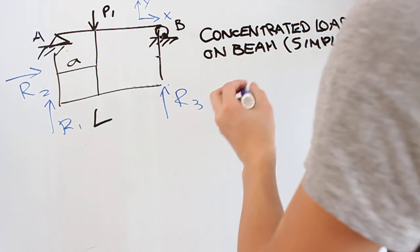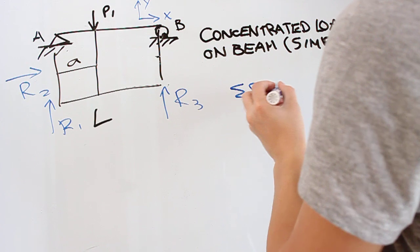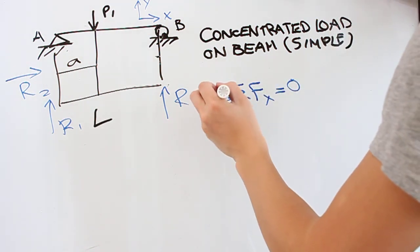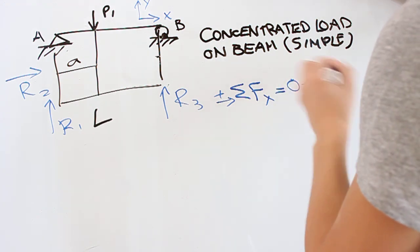We're first going to look at making all the net forces in the horizontal direction zero. There's only one here, so we know immediately that R2 is zero.